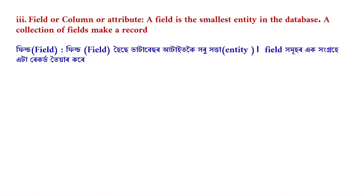A field is the smallest entity in the database. A collection of fields makes a record.